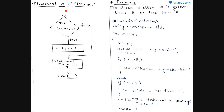Now let us see the flowchart of the if statement. If the test expression is evaluated to be true, then the body of the if block is evaluated. Otherwise, only the statement after if is evaluated and then the program ends. This is the flowchart of the if statement.